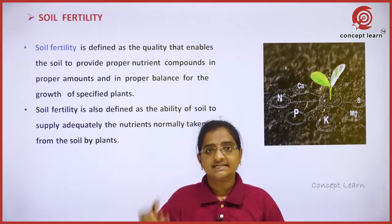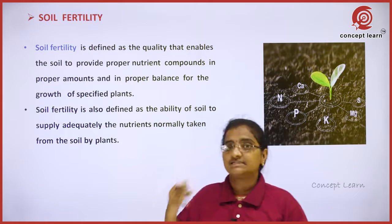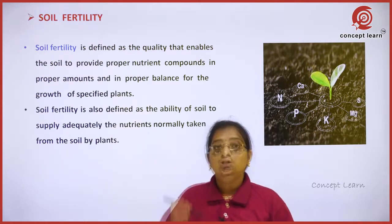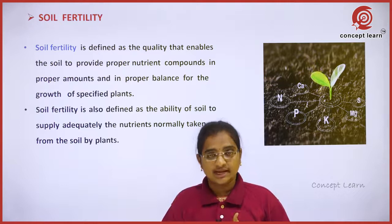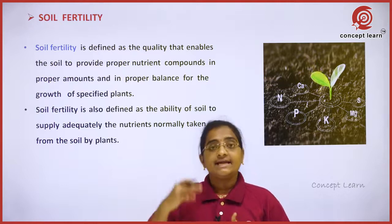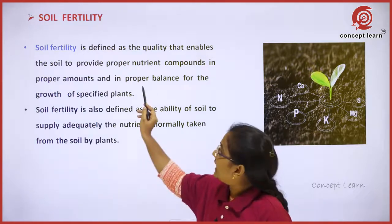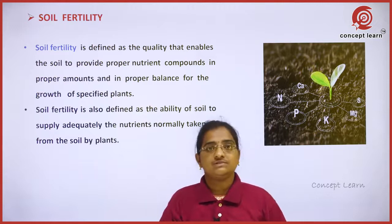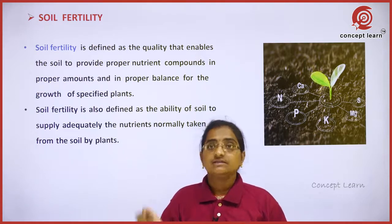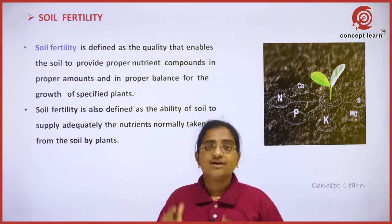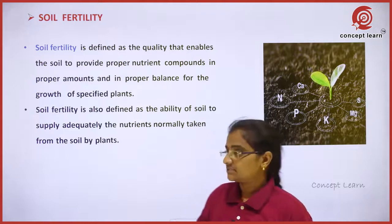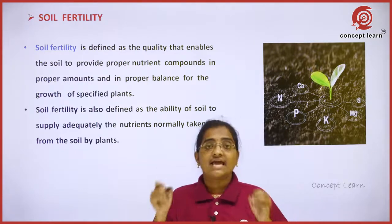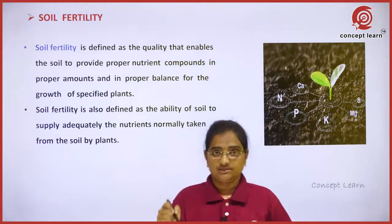Fertility means nothing but the ability of the soil to supply the plant nutrients in adequate amounts, in balanced proportions, in plant-required forms. Then that soil we can call it as a fertile soil. That means plants will require 17 essential nutrients — that is N, P, K, calcium, magnesium, then micronutrients, etc.